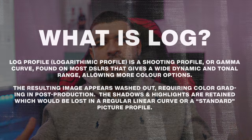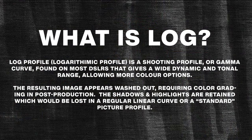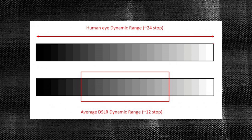So what is log? Log is actually short for logarithmic, and it's a color curve created inside of your camera to retain the most dynamic range from your camera sensor, ranging from the shadows all the way up to the highlights. Dynamic range is actually describing the number of grays between the black and the white.